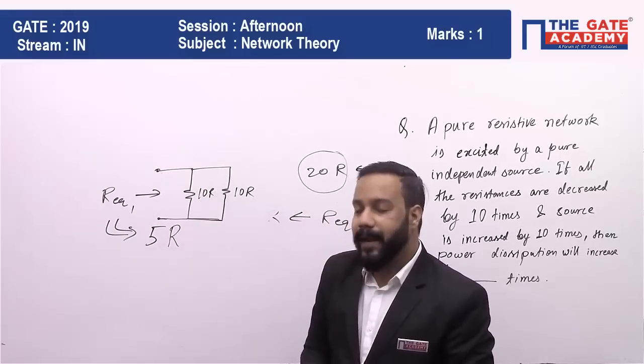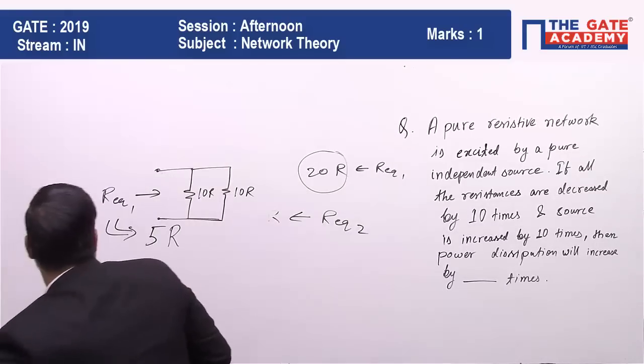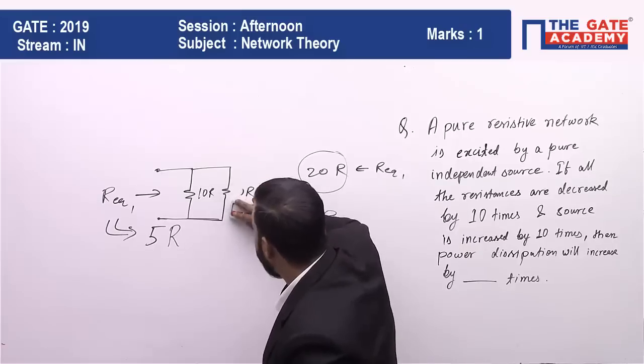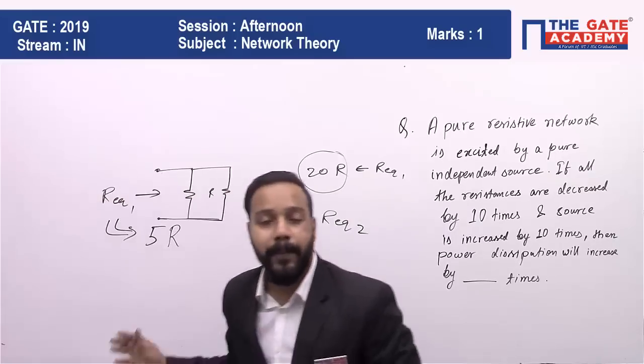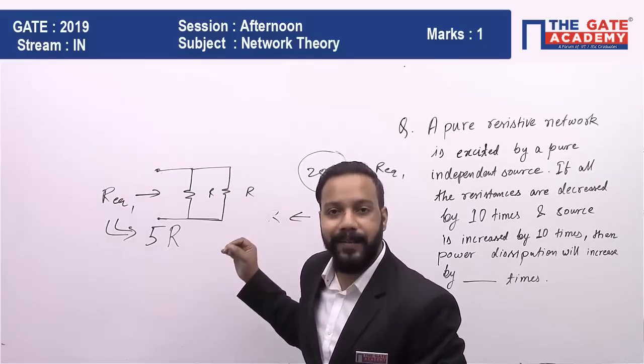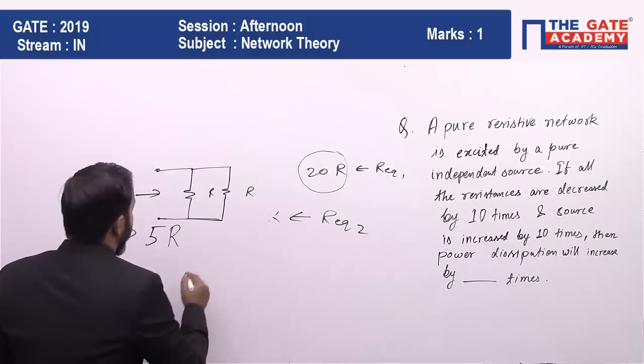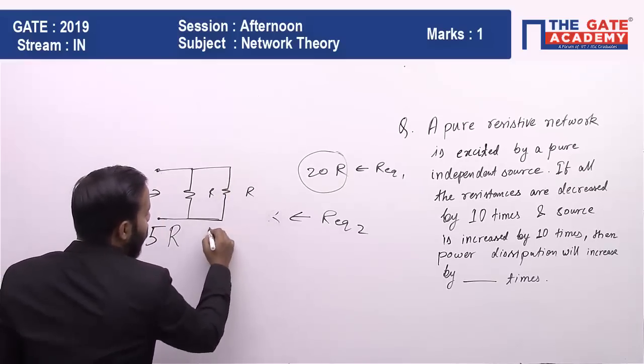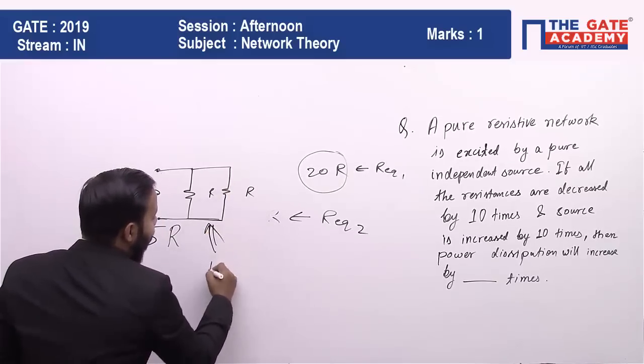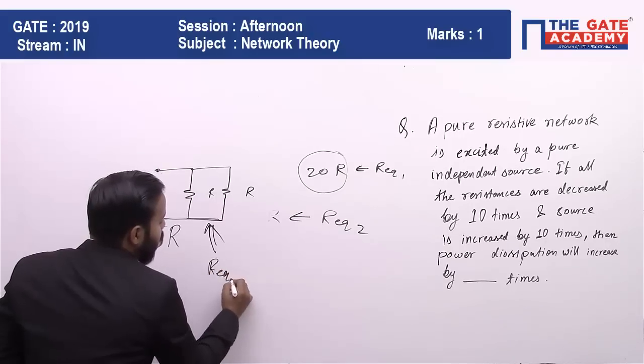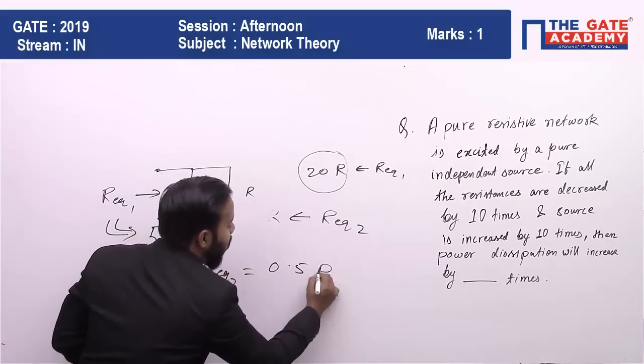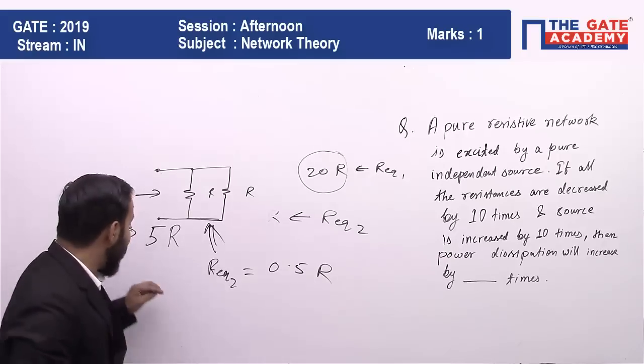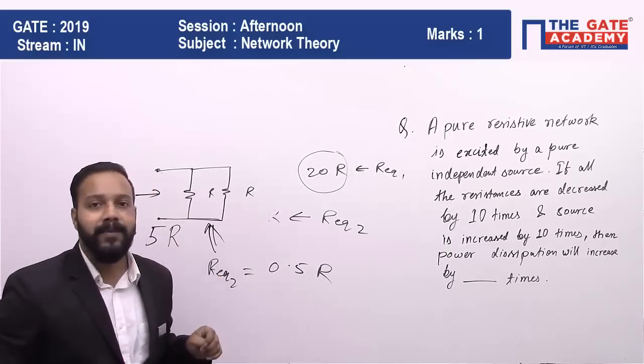Now, if we decrease both of them by 10 times, we get R and R in parallel, which gives R/2, that is 0.5R. For the second case, R_eq2 becomes R/2, which is 0.5R. You can see that it's again 10 times less than the first case.